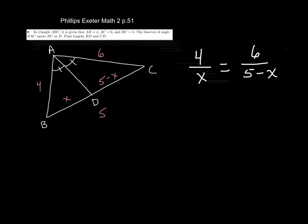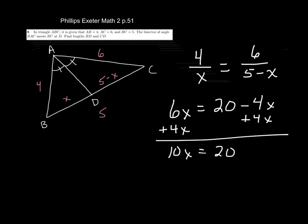Now, we can still cross-multiply. We cross-multiply. We get 6x equals what? 20 minus 4x. We can add the 4x to both sides. So, we get 10x equals 20. So, x equals 2. So, this is 2. And what would CD be? 3. So, once we've shown that, it's pretty straightforward. Thank you, board.